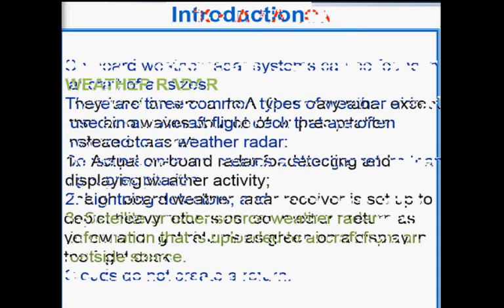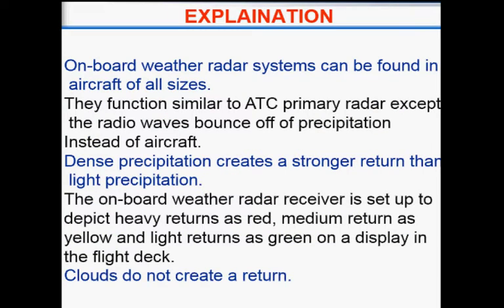Let's start with the first one: the onboard weather radar. We are mostly going to study about this onboard weather radar system. It functions similar to ATC primary radar, except the radio waves bounce off precipitation instead of aircraft. In common ATC radar, it provides information related to aircraft, whereas the weather radar provides information about precipitation in the clouds instead.